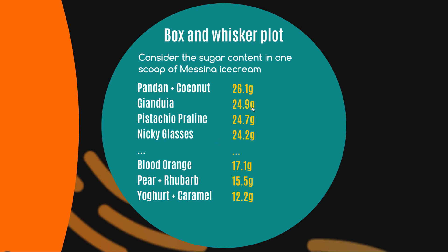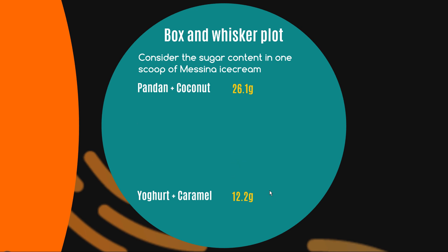We're actually assessing the grams of sugar in each scoop of these ice creams. Pandan and coconut has the most sugar and yogurt and caramel has the least. There are many flavors in between but I'm just showing the top ones and the bottom ones here — completely fictionalized, by the way. So if pandan and coconut is the maximum and yogurt and caramel is the minimum...